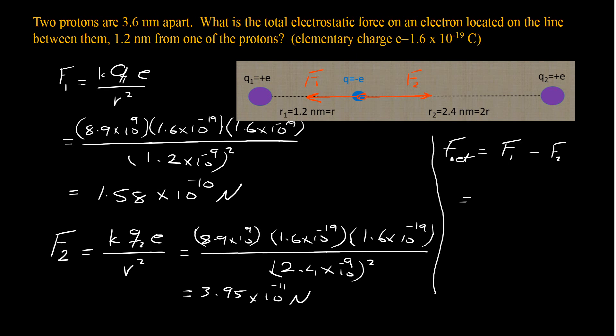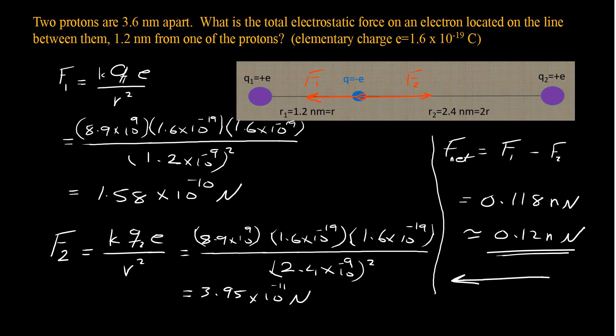Calculating the net force: 1.58×10⁻¹⁰ minus 3.95×10⁻¹¹ gives us approximately 0.118 nanonewtons — about 0.12 nanonewtons. That is the net total electrostatic force on the electron from the two protons. In terms of direction, since F1 is bigger than F2, the net force direction is toward the left, in the direction of F1.